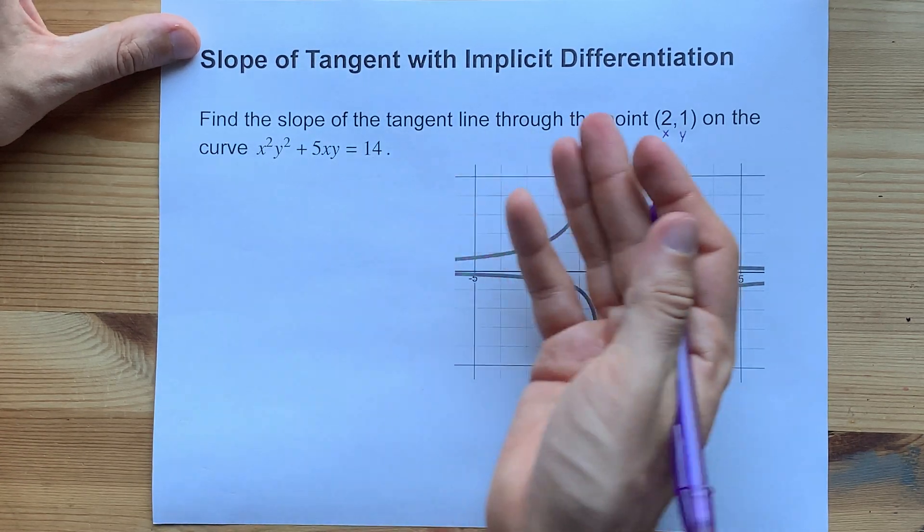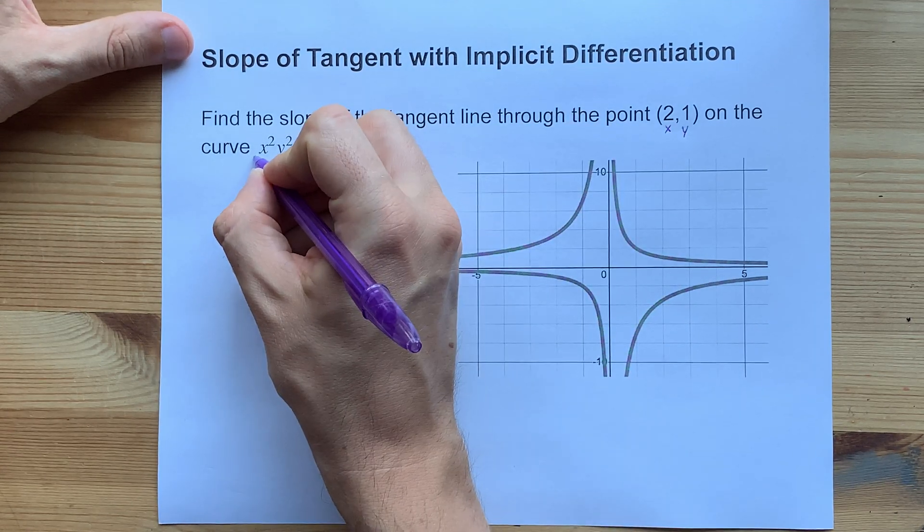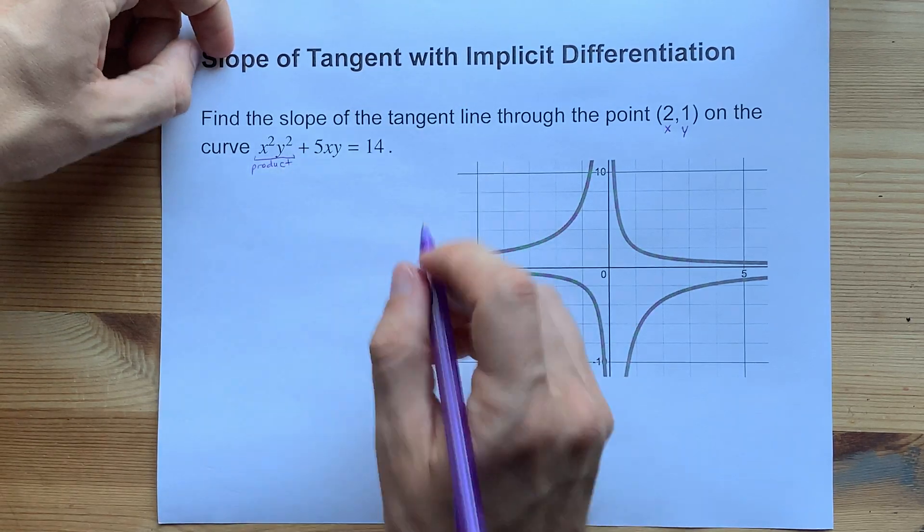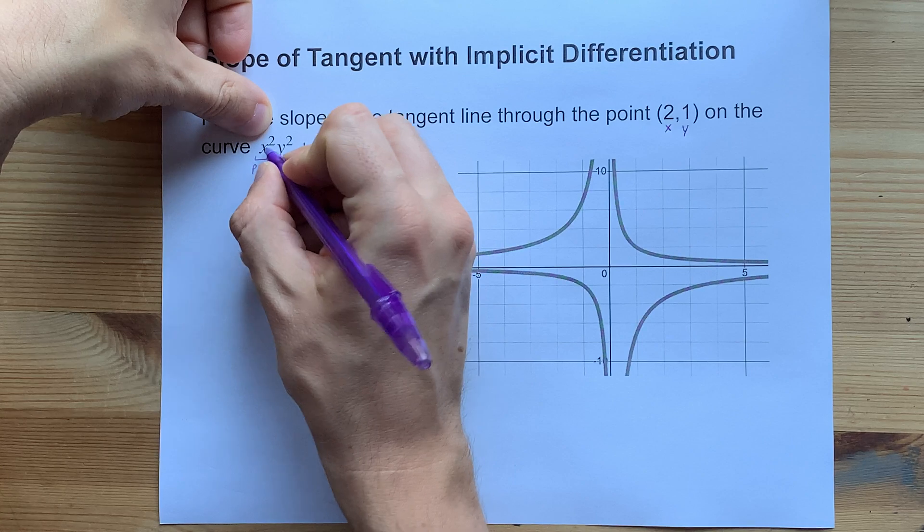Let's implicitly differentiate this together first. This is x² times y², that's going to require the product rule. Product rule is derivative of the first thing, x², times the second thing as is,